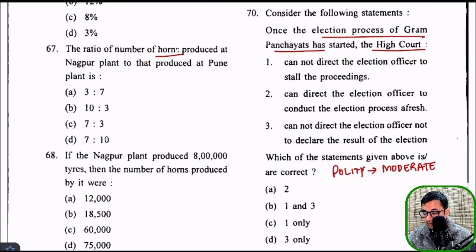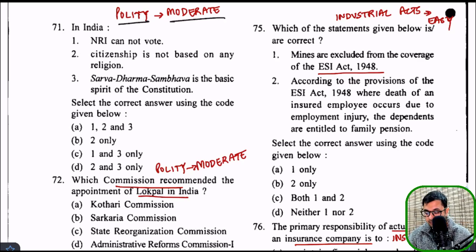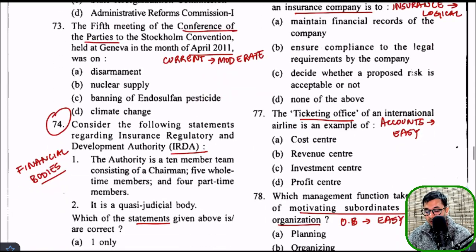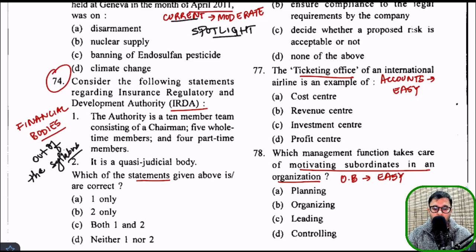A question on the election process of gram panchayats falls between polity and public administration — it will appear in both. A question on NRI voting rights and citizenship not being based on religion — from polity — was moderate level. There were two or three questions from Lokpal — moderate level. A question on the Stockholm Convention from current affairs was spotlight-type. A question on IRDAI from financial bodies was completely out of the syllabus — it's hard to fit it anywhere as these are independent or autonomous bodies, and there are too many to cover.